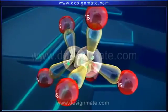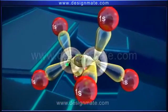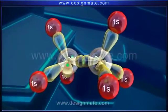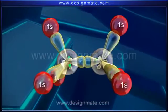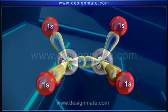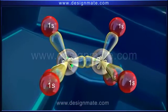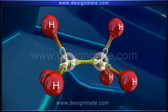In other words, whenever a carbon atom in an organic compound forms four sigma bonds which are directed along the corners of a regular tetrahedron, it is sp3 hybridized.